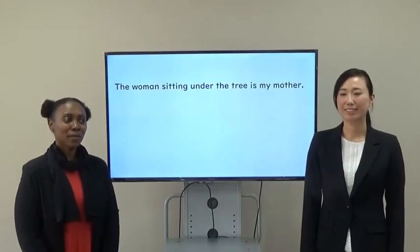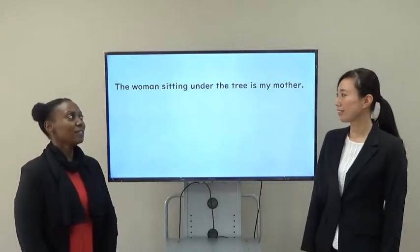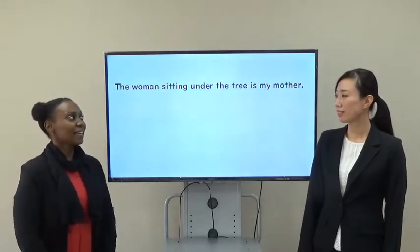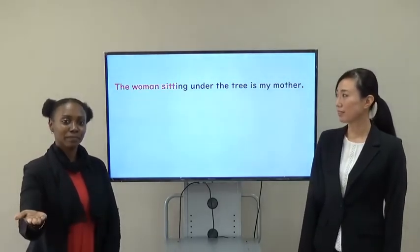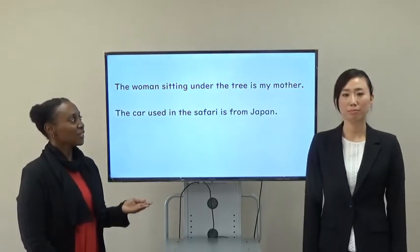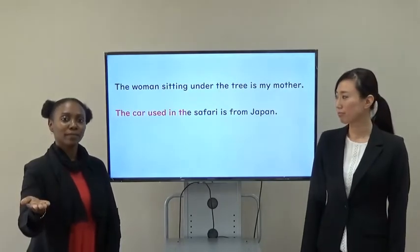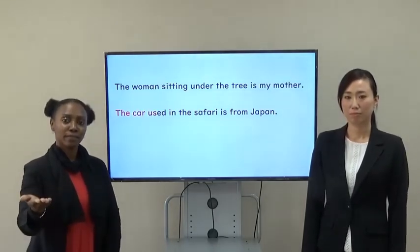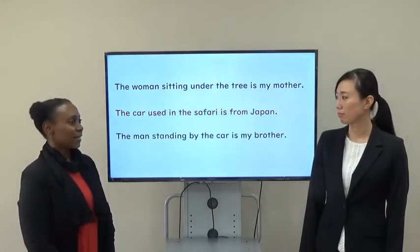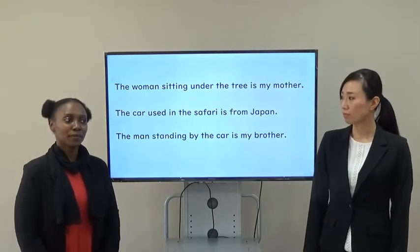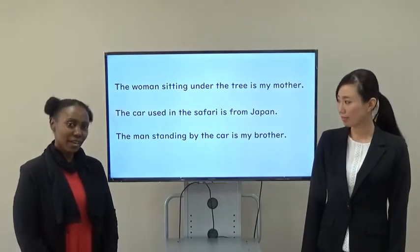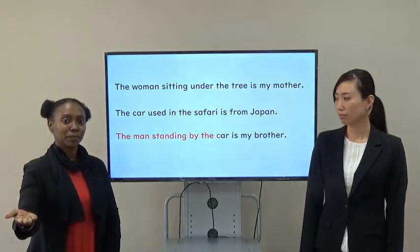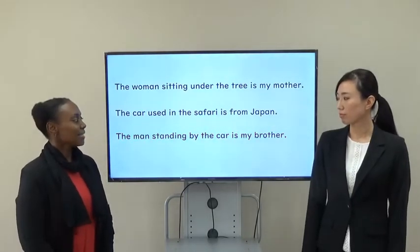Let's practice reading. Okay, repeat after me. The woman sitting under the tree is my mother. The woman sitting under the tree is my mother. The car used in the safari is from Japan. The car used in the safari is from Japan. I also said, the man standing by the car is my brother. Oh, it's the same grammar. That's right. The man standing by the car is my brother. The man standing by the car is my brother.